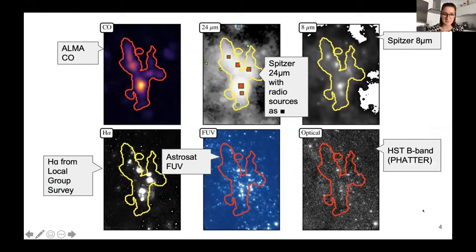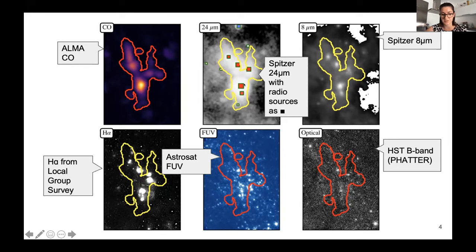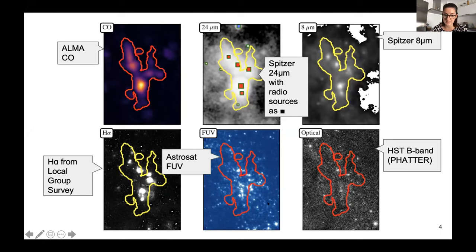For each GMC, we have six maps to check. The contour illustrates the boundary of the GMC in question. First, the ALMA CO(2-1) map over the cloud, which shows the velocity profile of the molecular emission. Then we have the Spitzer 24 micron emission map, which shows emission from warm dust in the galaxy, frequently associated with embedded star formation — overlaid with square symbols showing radio emission sources. The Spitzer 8 micron image traces emission from polycyclic aromatic hydrocarbons, good for tracing embedded ionization regions. At the bottom left, the H-alpha emission map from the Local Group Survey. Then we have a map showing far-UV sources from AstroSat, which can be associated with young stars and clusters. Finally, the HST image in black and white shows us compact stellar clusters.